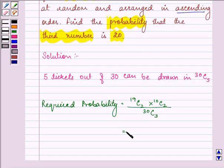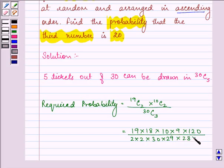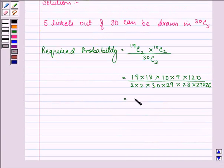So on solving we have it as 19 times 18 times 10 times 9 times 120 divided by 2 times 2 times 30 times 29 times 28 times 27 times 26, which on simplifying gives us the answer as 285 over 5278.